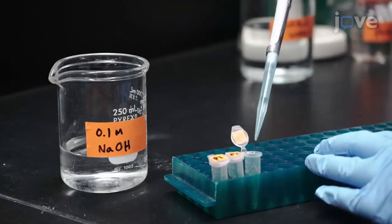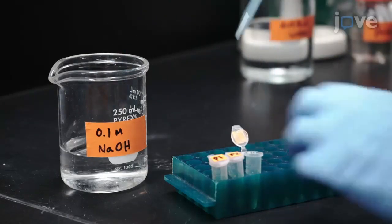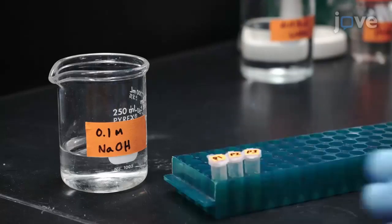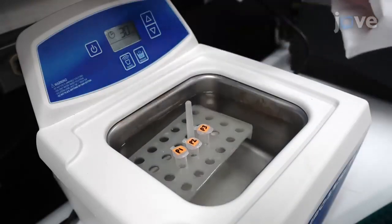Add 500 microliters of 0.1 molar sodium hydroxide to each tube. Close the lids tightly and sonicate the tubes for 30 minutes.